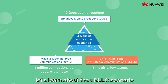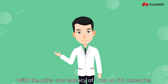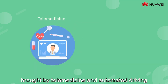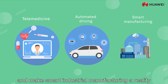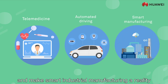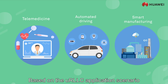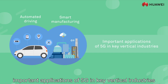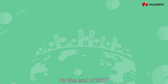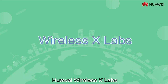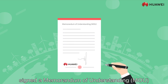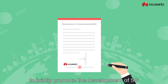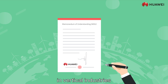Finally, let's learn about the URLLC scenario. With the ultra-low latency of 1 ms on 5G networks, we can experience the convenience brought by telemedicine and automated driving and make smart industrial manufacturing a reality. Based on the URLLC application scenario, automated driving and smart manufacturing will be important applications of 5G in key vertical industries. By the end of 2017, Huawei Wireless X Labs signed a Memorandum of Understanding (MOU) with multiple global industrial robot and automobile companies to jointly promote the development of 5G in vertical industries.